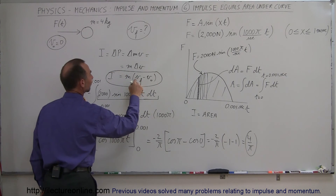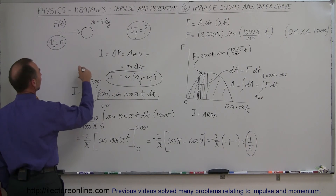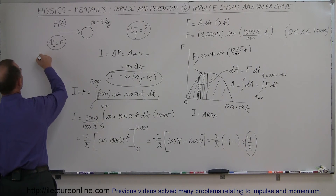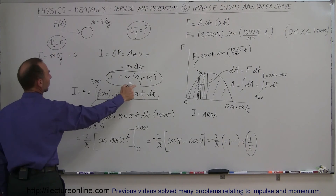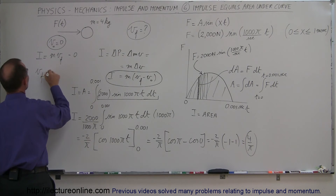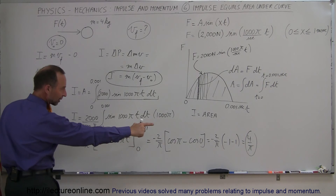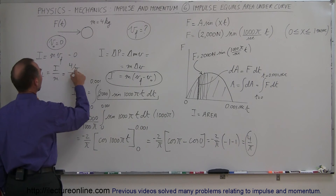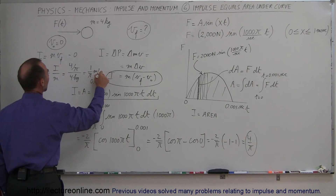Now that we know the impulse, we can find v final. Since v initial is equal to 0, the impulse equals m times v final. Therefore, v final equals the impulse divided by the mass. The impulse is 4 divided by pi and the mass is 4 kilograms, which means v final equals 1 over pi meters per second. There is our answer.